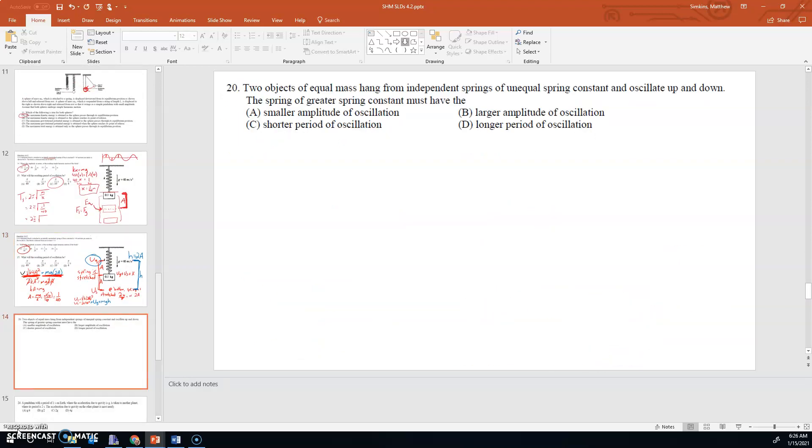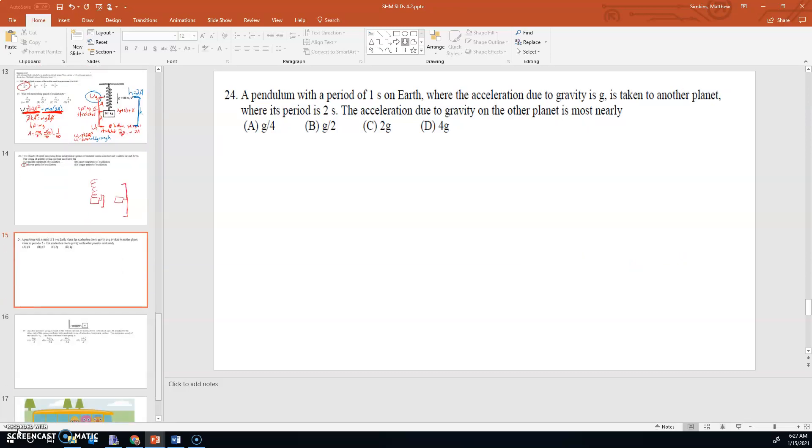Number 20. Two objects of equal mass hang from independent springs of unequal spring constant. Spring of greater spring constant must have, well, tighter spring is going to have a, not smaller amplitude, but a shorter period. And this is actually interesting. Did you know that the amplitude doesn't affect the period? So if I take this spring and I only move it a little bit like this, it's going to bounce back and forth like that. It's going to do that in the same amount of time as if I just placed it way up here and it went all the way up and all the way down. The amplitude doesn't affect the period of a spring oscillator. So that one's got to be C for number 20.